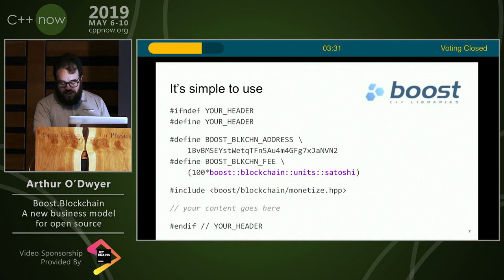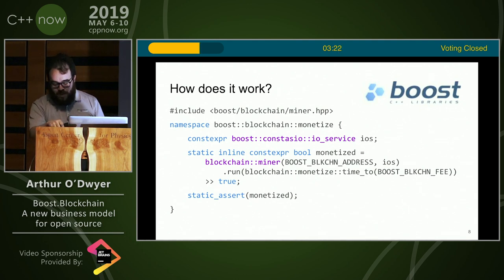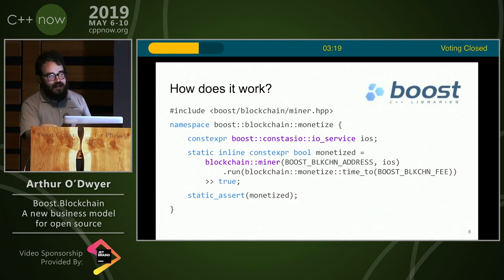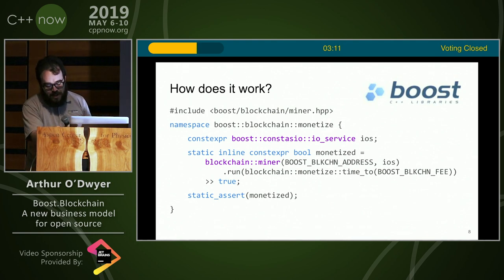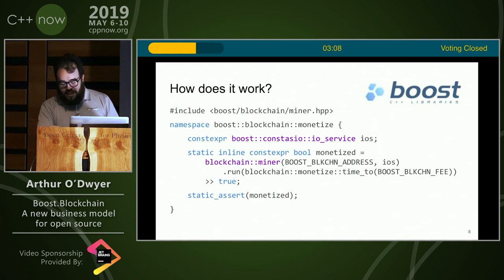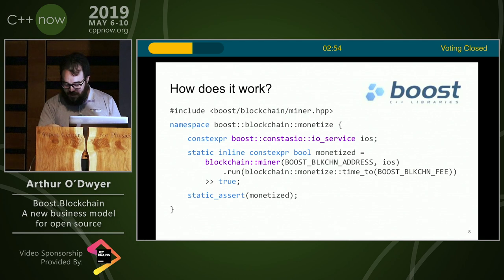Let's take a look at how Boost Blockchain works on the inside. Inside monetize.hpp, we spin up an I/O service named IOS. Notice we're using the I/O service from const_asio, not regular asio, because we want it to happen at compile time. You might expect const_asio to be a keyword, but it's actually an identifier. Then we make our static inline constexpr bool monetized, and we set it to the result of the constexpr function that creates a Bitcoin miner initialized with BOOST_BLOCKCHAIN_ADDRESS, and we run it for a length of compile time calculated from our desired fee, then return true. You might wonder why we use right-shift instead of comma on that line — it's because right-shift looks cooler. Blockchain miner overloads the right-shift operator so that we're able to do this. Finally, on the last line, we static_assert that we had successfully monetized our library.